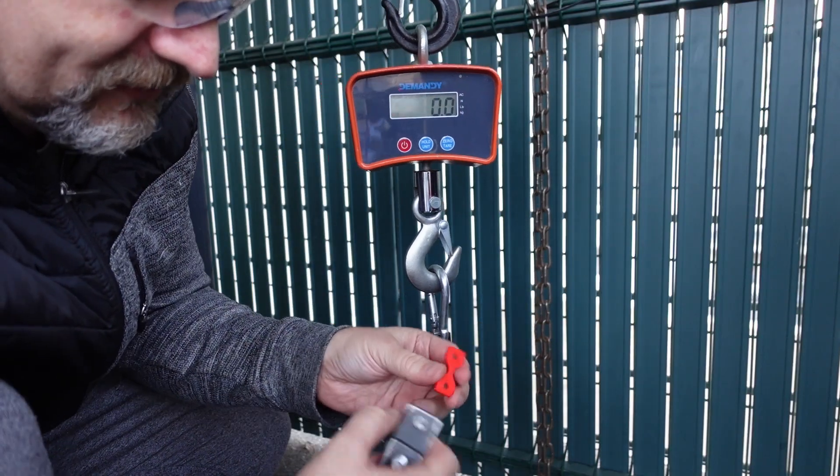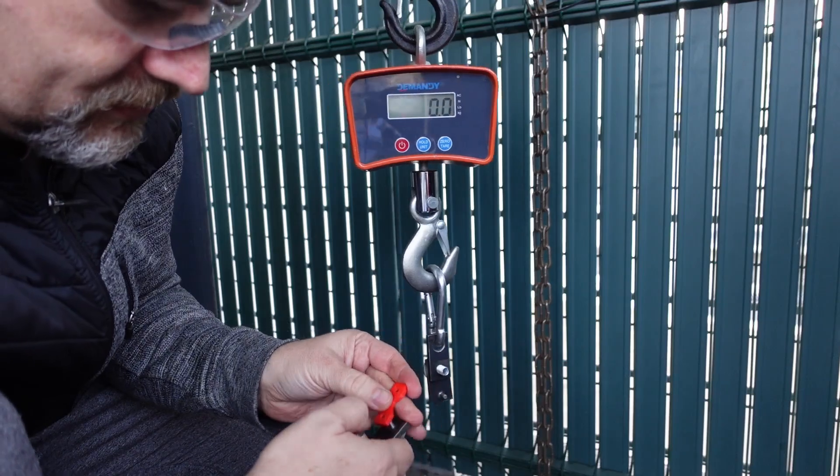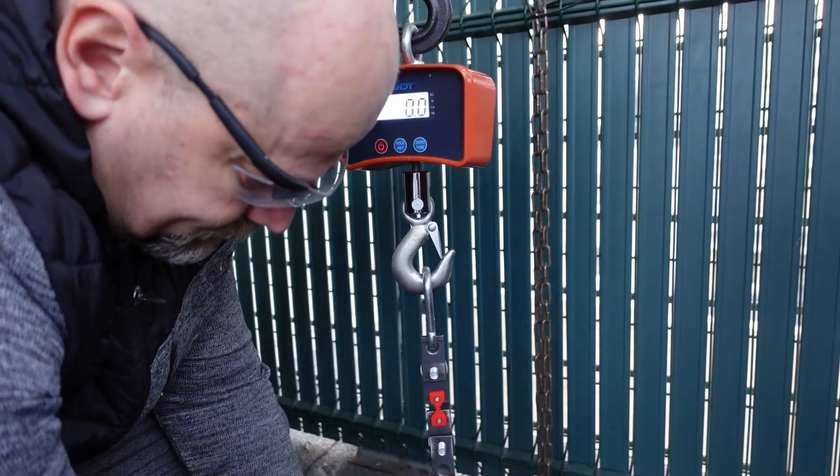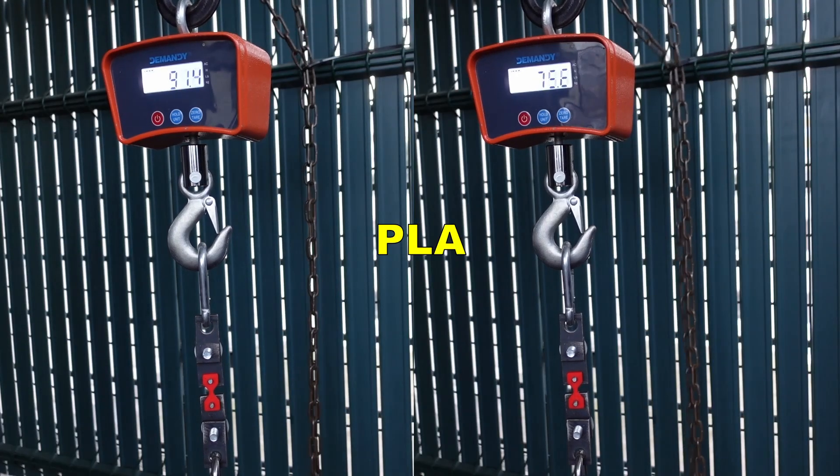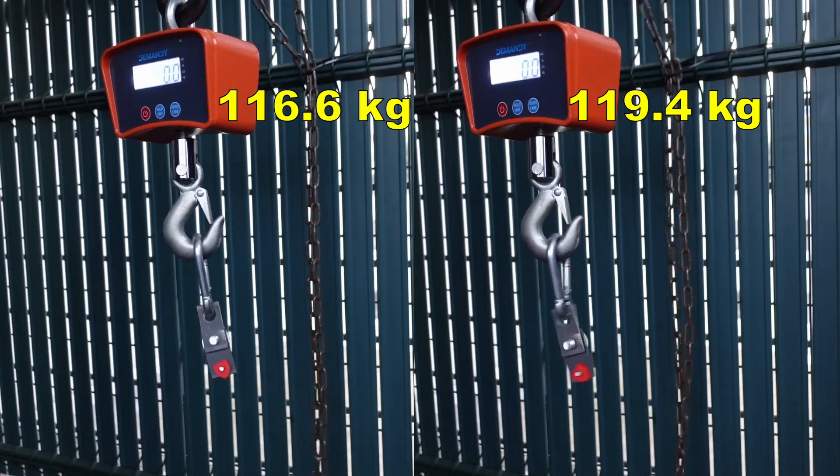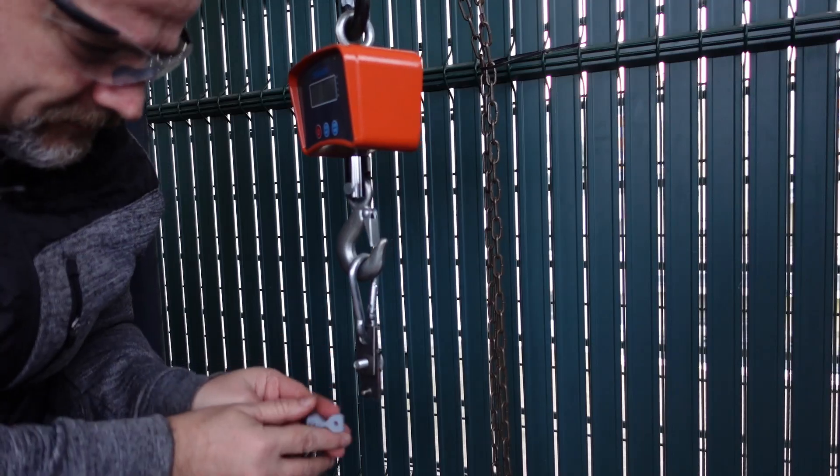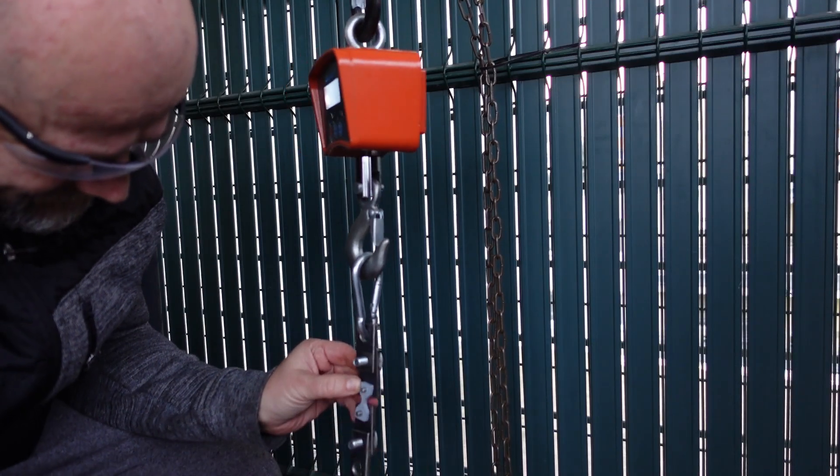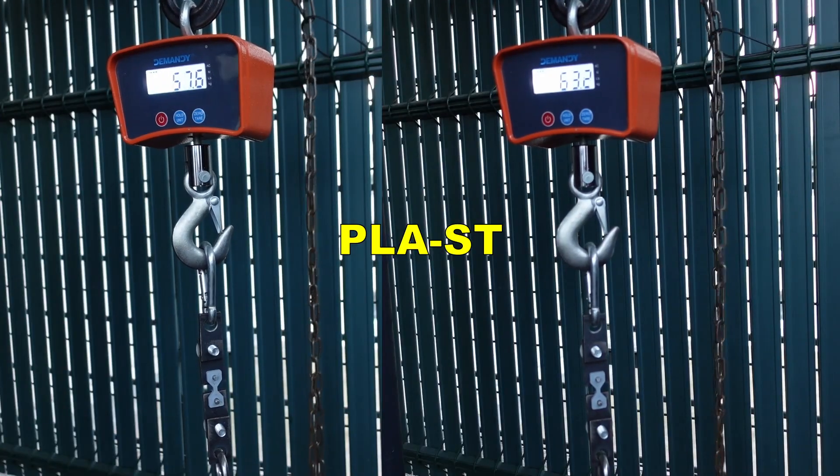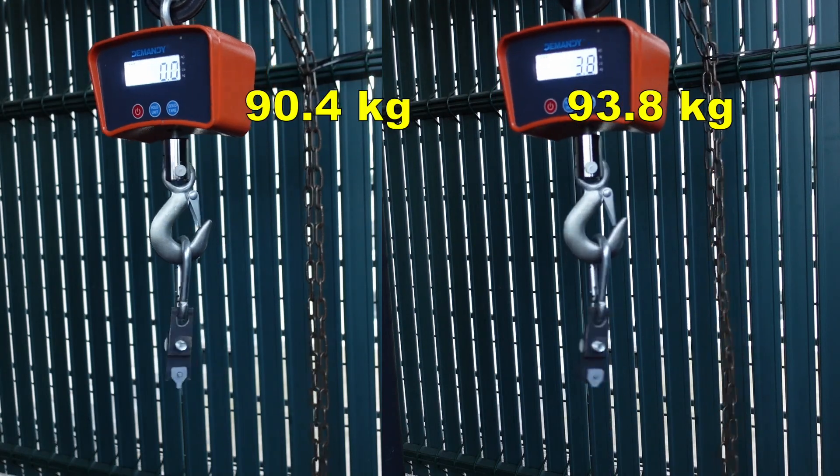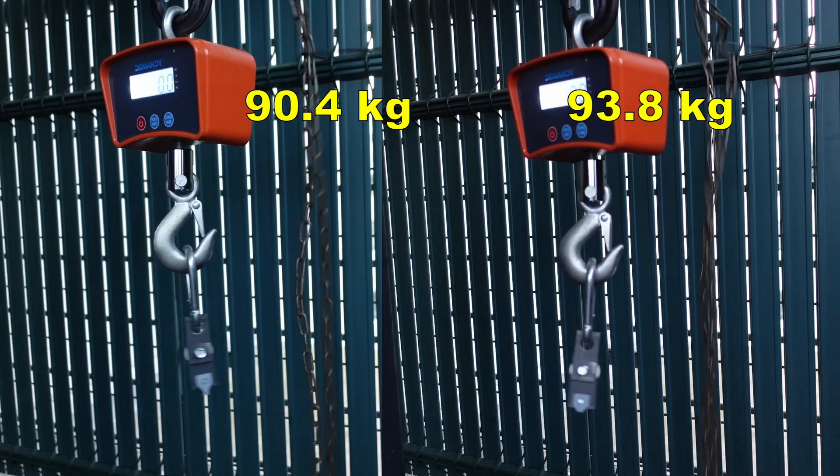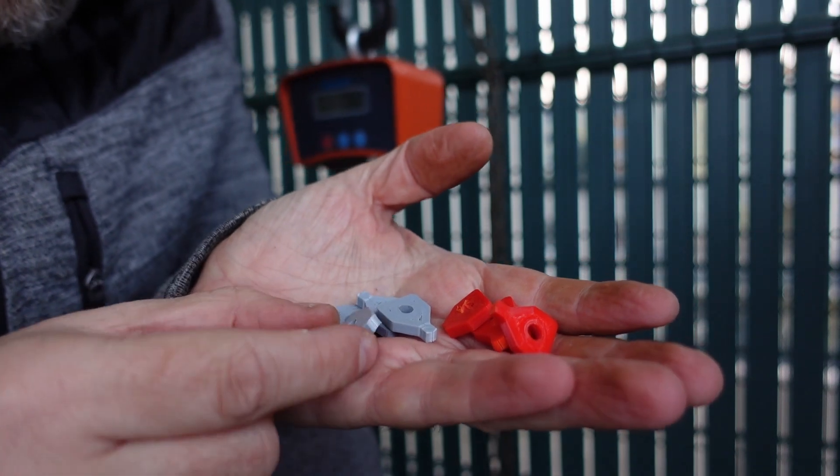I'm starting with tensile test. These two objects are printed in horizontal position. Now the Strongman.